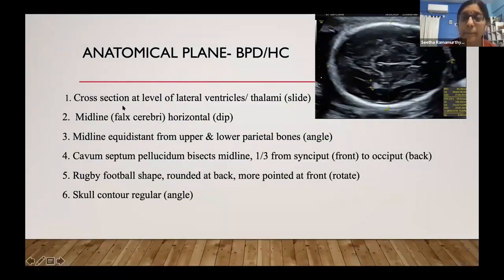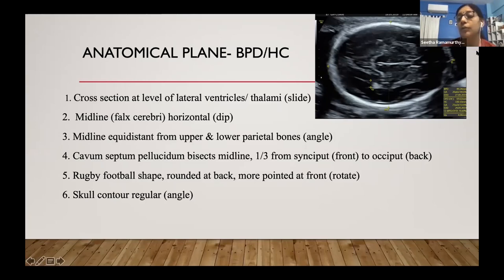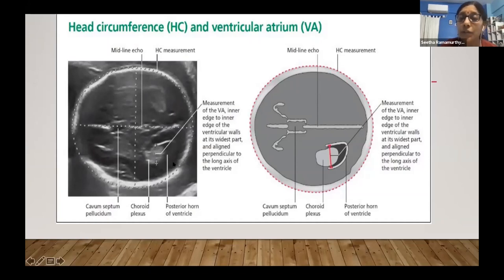For the BPD and HC planes, take a cross-section at the level of the lateral ventricles or thalami. You need the falx cerebri visible as a dip. The midline should be equidistant from the parietal bones; you may need to angulate. You must see the cavum septum pellucidum — one third from the front — and achieve an oval-shaped head with a regular skull contour. The measurement is taken along the ellipse or as a perpendicular BPD.